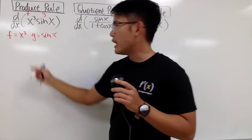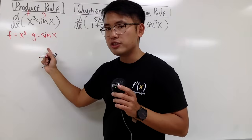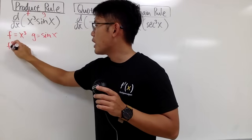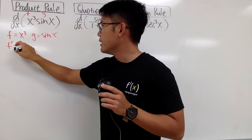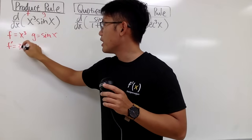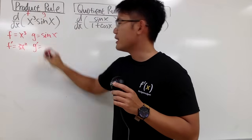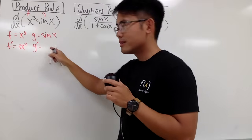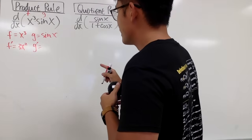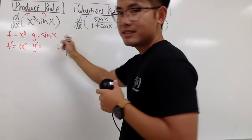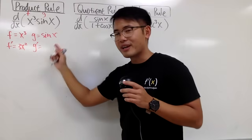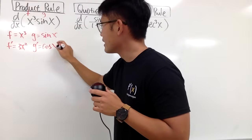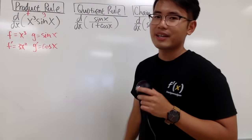From here, I will just differentiate them individually. f prime, we get 3x squared. And then g prime — what's the derivative of sin x? This is something that you have to remember: the derivative of sin x is cos x.